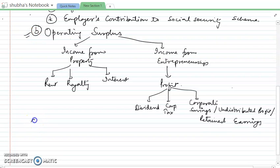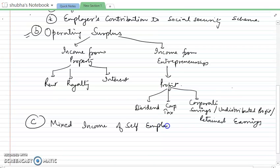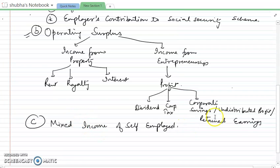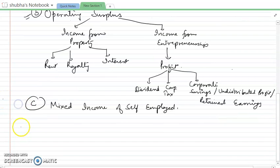The third part comes from mixed income of self-employed. What does mixed income of self-employed mean? Someone who is self-employed has their own income — they will not pay themselves a salary as such. But production and services are generated, so we have to add the imputed value of the self-employed.